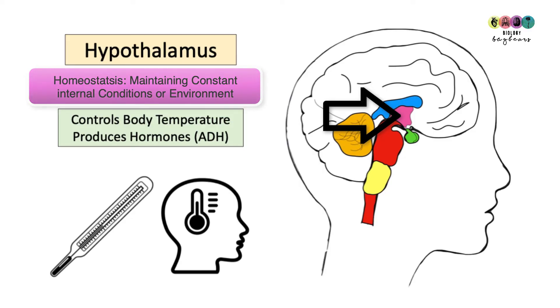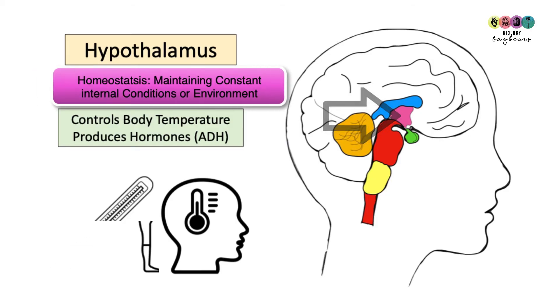Just beneath the thalamus is the hypothalamus outlined here in pink and it has a role in homeostasis, maintaining constant internal conditions or environment. It basically controls things like body temperature, osmoregulation and it also produces hormones, for example that hormone ADH.